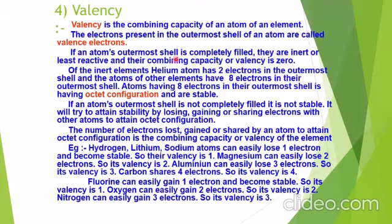If an atom's outermost shell is completely filled, they are inert or less reactive and their valency is zero — they will neither lose nor gain electrons because the electrons are already complete. For inert elements, helium has two electrons in its outermost shell, while other inert elements have eight electrons. Atoms having eight electrons in their outermost shell have an octet configuration and are stable. Two electrons is called a duplet; eight electrons is called an octet.